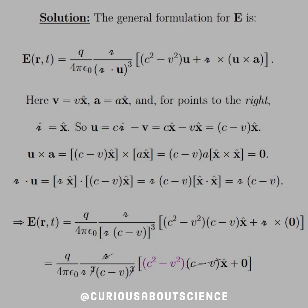And so now all we need to do is find out what the heck script R dot u is. So we have script R x-hat and C minus V x-hat, so factor the script R and C minus V, and x-hat dotted with x-hat is actually what we like. That gives us one.